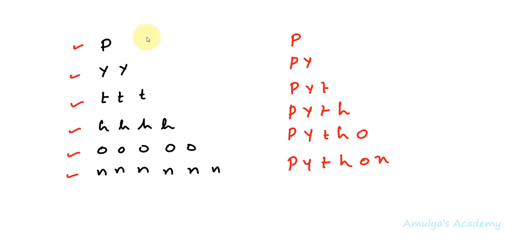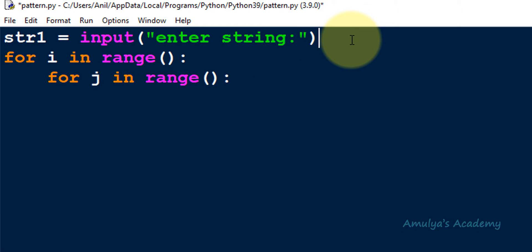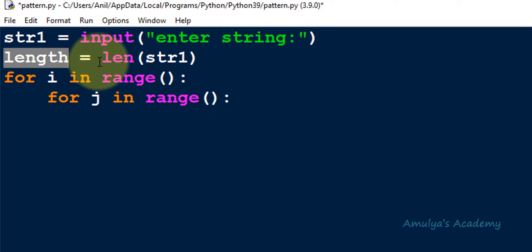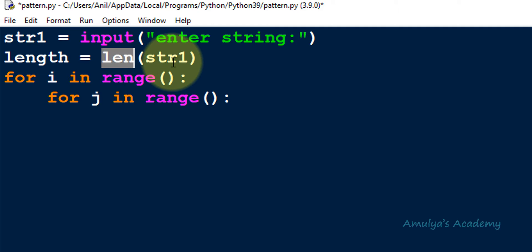In this first pattern we want six rows. We get six rows when the input string is 'python', which contains six characters. If the input string contains seven characters then I want seven rows. So the number of rows depends on the length of the string. I will use the len function and store the result in a variable called length.